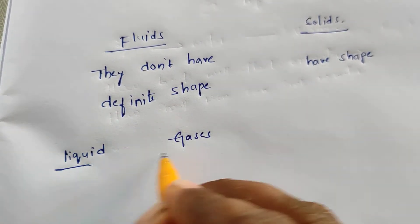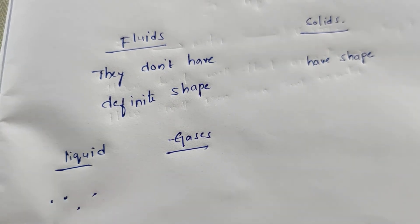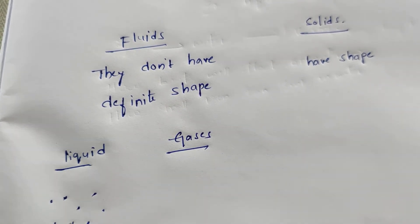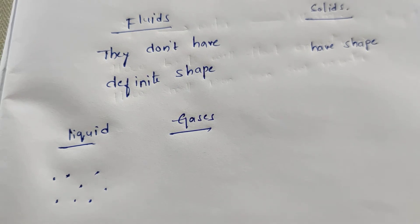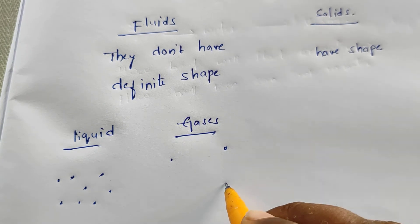So if you take about densities, liquid density will be like this, somewhat spacious. Density means molecular structure. And about gases, it is very very huge. You can see here, the molecules are very very spacious.